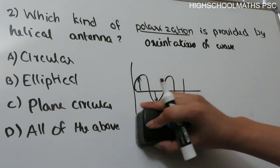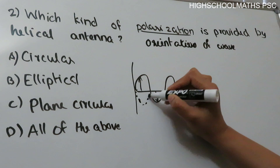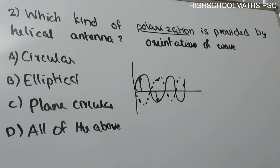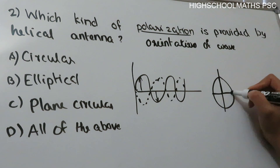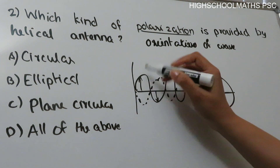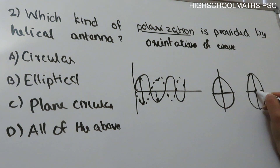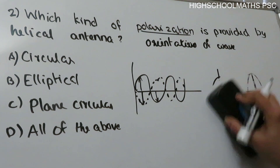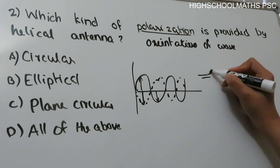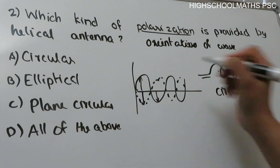A helical antenna has a helix shape, so it produces circular polarization. When the vertical and horizontal components are 90 degrees out of phase and their magnitudes are equal, the result is circular polarization. If the magnitudes differ, it becomes elliptical polarization with a major and minor axis. For a helical antenna, the answer is circular polarization — option A.